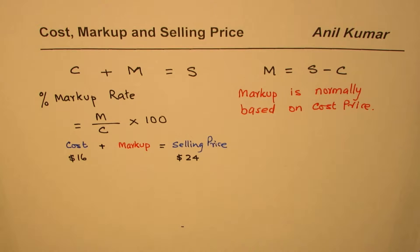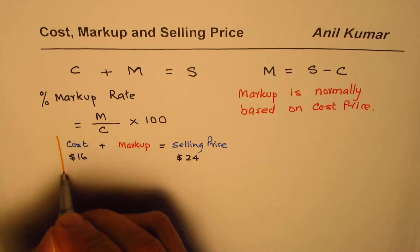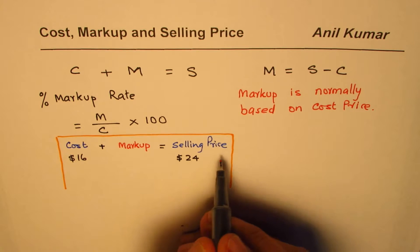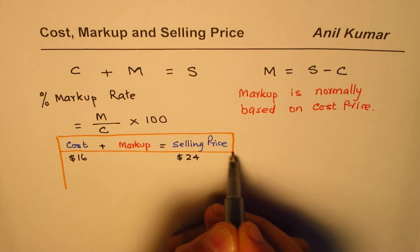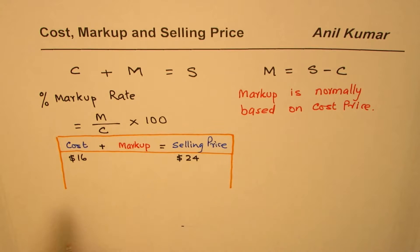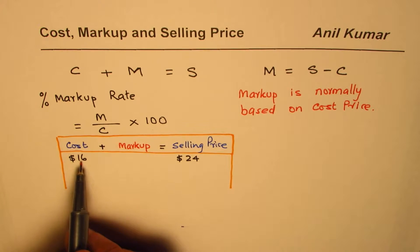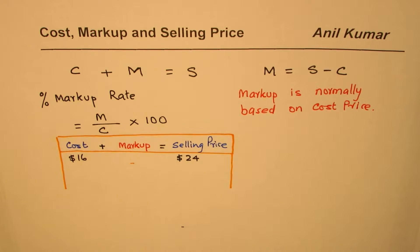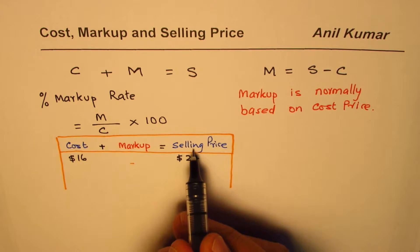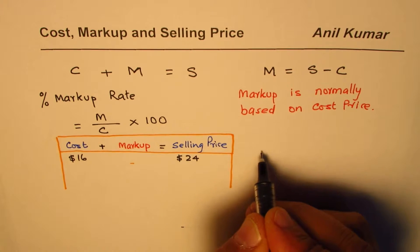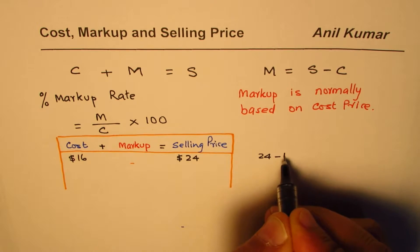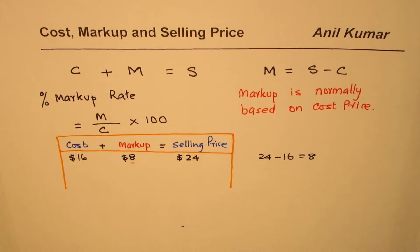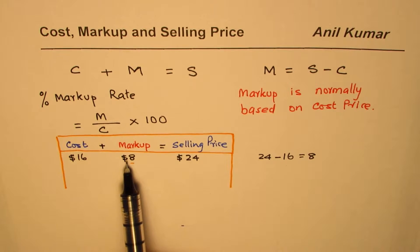I'll use a table to show the relation: cost plus markup equals selling price. In this question we know the cost is $16 and the selling price is $24. Markup is the difference between selling price and cost price, so we calculate 24 minus 16, which equals 8. So the markup is $8.